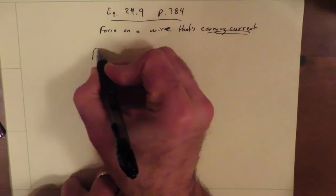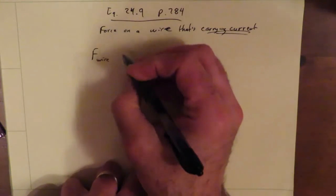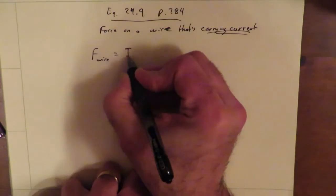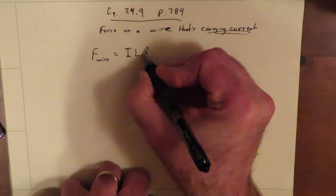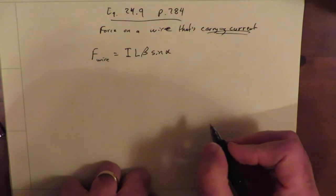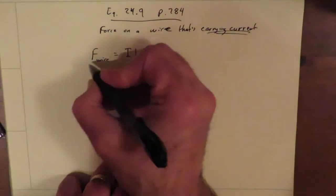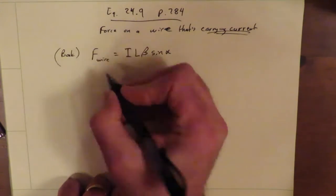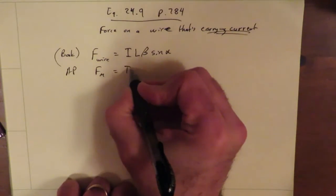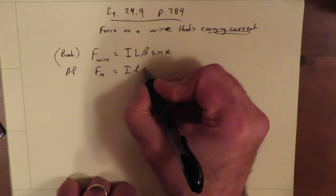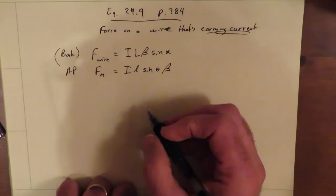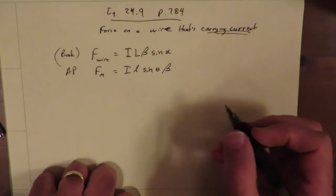Anyway, the equation is, F on a wire, this is in the book, is equal to I, L, B, beta really, sine alpha. Okay. AP, this is the book. AP says it's the magnetic force, and they do it in terms of I, L, sine theta, beta. And they put some absolute values around these things as well, but I'm going to not clutter it up too badly.